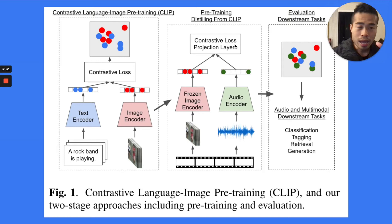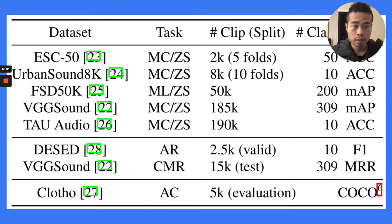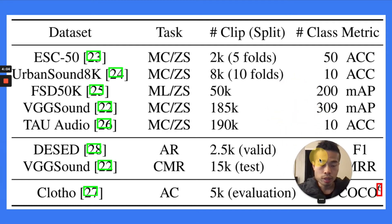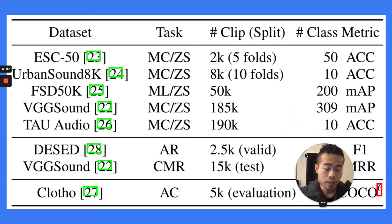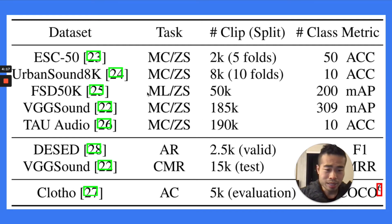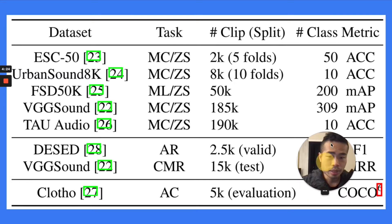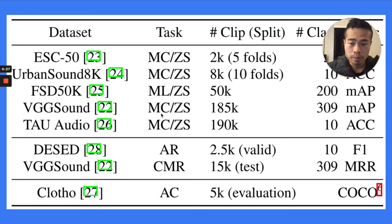The main purpose of this pre-training is to train a useful audio encoder, which they then use for downstream tasks. The downstream tasks include audio classification, which is relatively straightforward — you give some audio clip and the model tells you what kind of audio it is, for example on the Urban Sound 8K dataset, which has 10 classes and 8,000 clips. There are also audio retrieval tasks and captioning tasks.